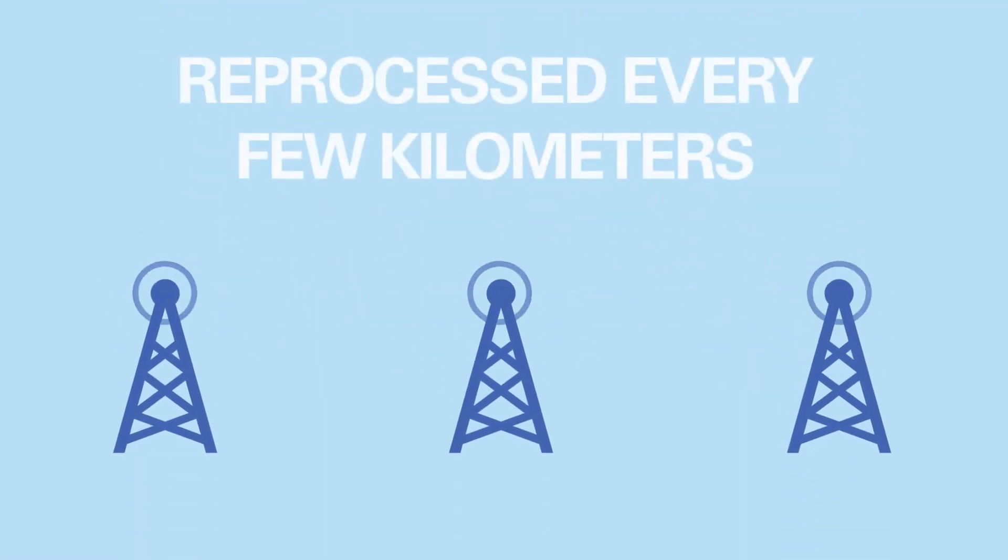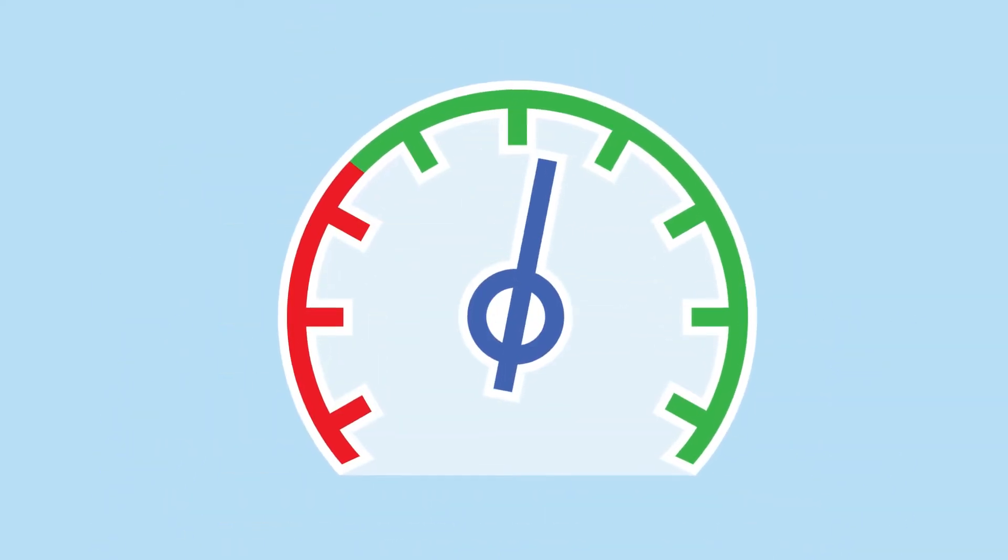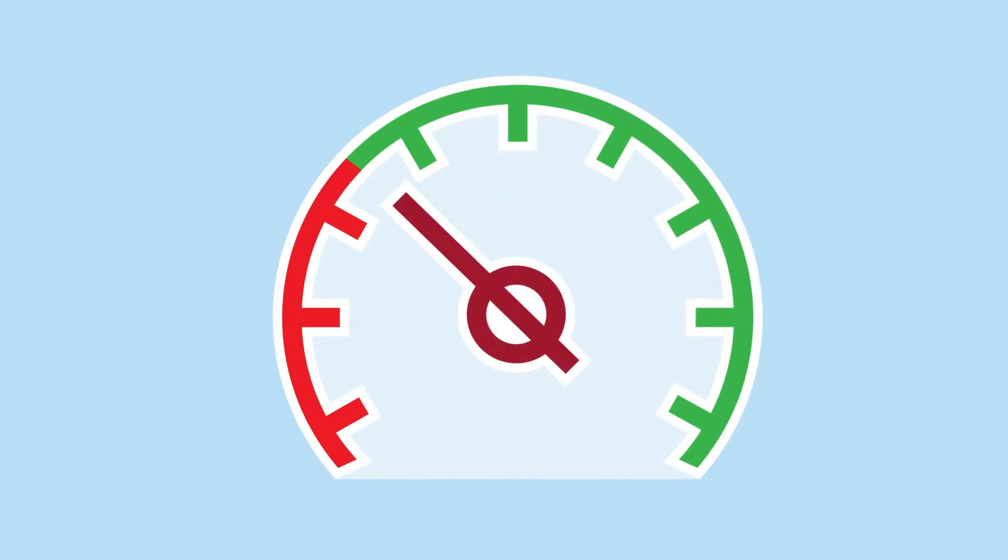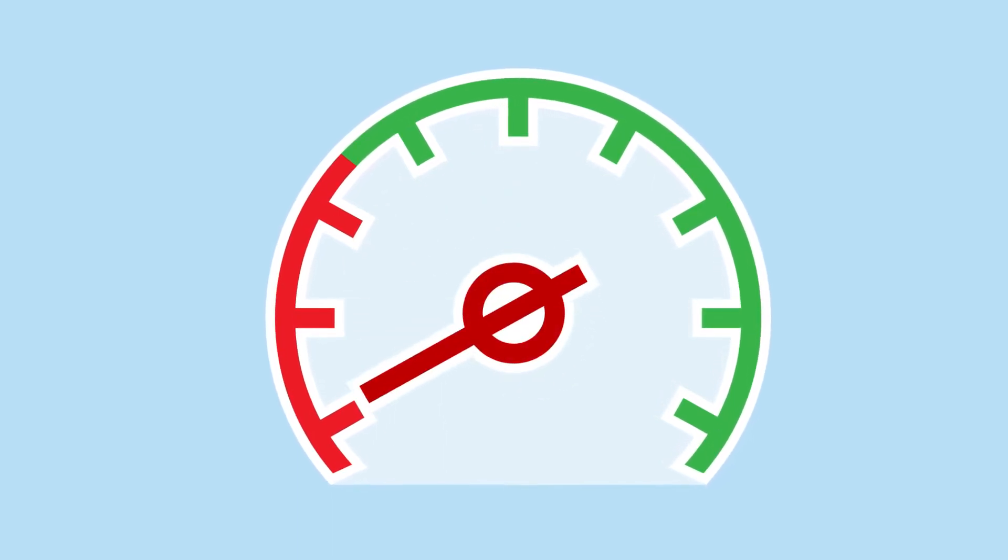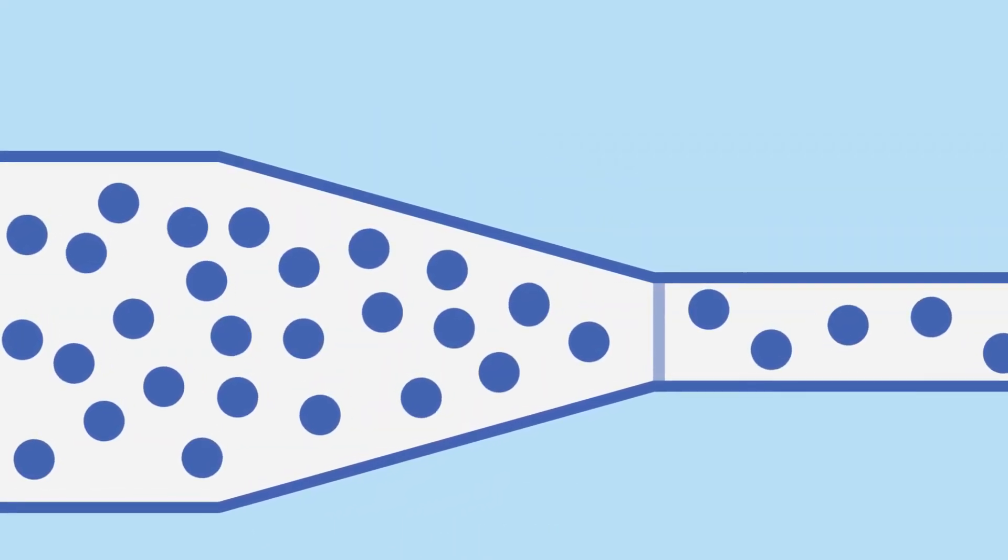It means you must boost a signal every few kilometers for it to remain dependable. This dramatically slows the signal speed as the more boosts are added, more potential points of failure are created, and more points of reprocessing. The other major problem with copper is the amount of data you can pack into an electronic signal.